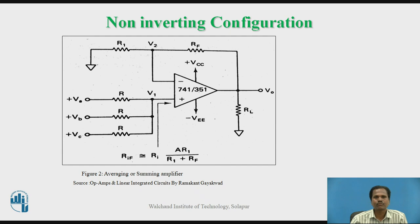Now let us go to the second circuit configuration — the non-inverting configuration of the operational amplifier. The non-inverting configuration can be implemented as a summing or averaging amplifier by selecting proper values for feedback resistor R-F and input resistor R-1. V-A, V-B and V-C are three input voltages applied to the non-inverting input using the same value resistors R. V-1 is the voltage at non-inverting input and V-2 is the voltage at inverting input. Multiple inputs are applied at the non-inverting input.